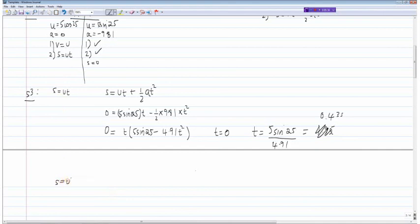So u is equal to, horizontally, 5 cos 25 multiplied by time, which is equal to 0.43. And from that, we get a horizontal displacement of 1.95 meters. So that's how you basically go through this recipe of working your way through this example.